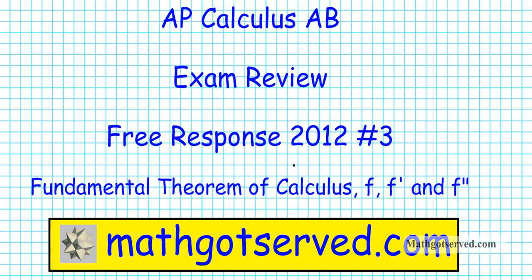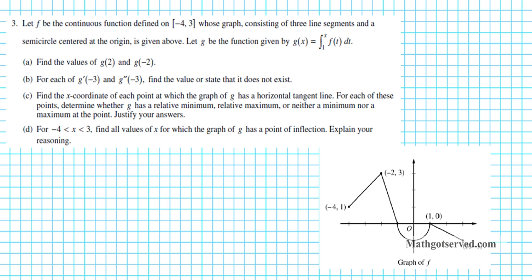Good day students. Welcome to number 3 of the 2012 free response questions for the AP Calculus AB exam. In this problem set we're going to be looking at the fundamental theorem of calculus and connecting F, F prime, and F double prime. Let's take a look at question number 3a. We're told to find the values of g(2) and g(-2). We know that g(x) is equal to the integral from 1 to x of f(t) dt.